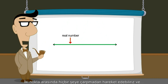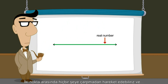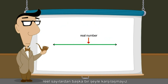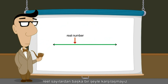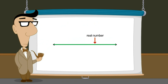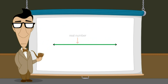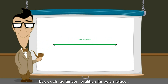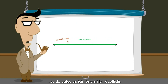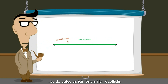This means that you can move smoothly between any two points and never encounter anything but real numbers. Since there are no gaps, the real numbers form a continuum, a property which is essential for calculus.